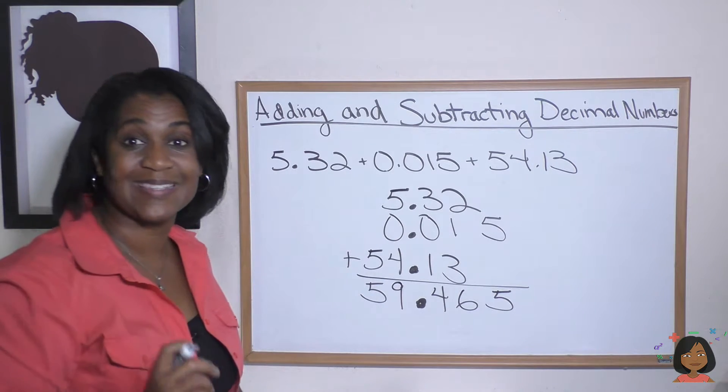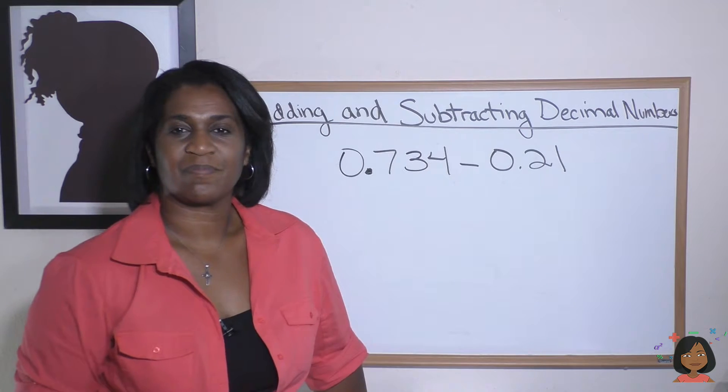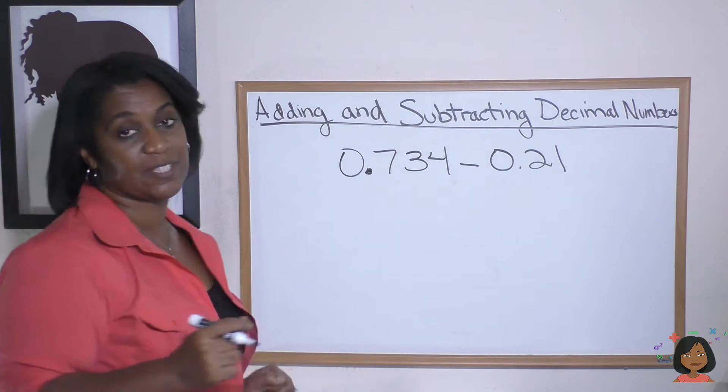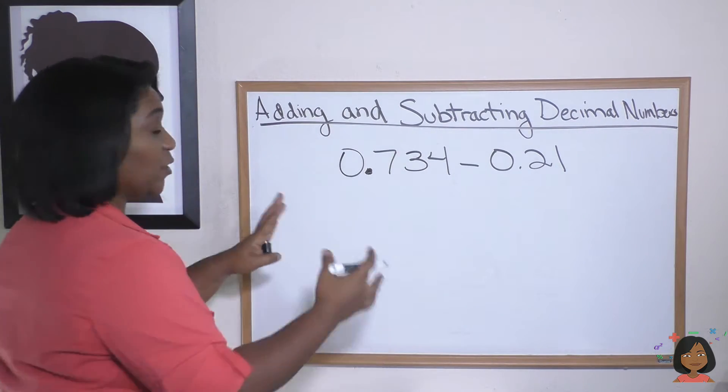One more example. This time I'm giving you a subtraction problem. Here we have 0.734 minus 0.21. What do we do? Well, you know I like to write them vertically, so let's do it.